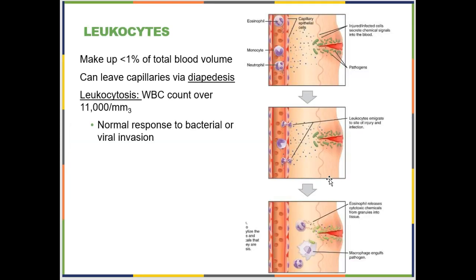A couple of general terms about leukocytes. First is diapedesis — this is where white blood cells attach to the blood vessel wall, crawl out, and then migrate towards an infection or site of damage. This is not cells being passively squirted through a hole; this is an active process where the cells intentionally move out of the blood vessel into surrounding tissues.